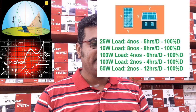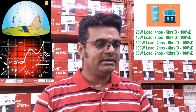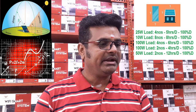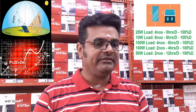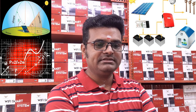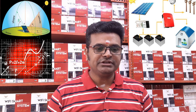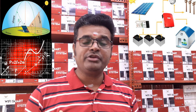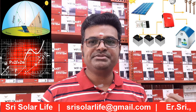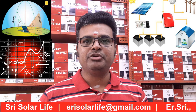Here are the load calculations we have considered: 25 watts, 4 numbers, running 5 hours per day; 10 watts loads, 8 numbers, running 8 hours per day; 100 watts loads, 4 numbers, running 6 hours per day; 100 watts loads, 2 numbers, running 4 hours per day; 50 watts loads, 2 numbers, running 12 hours per day. All loads are calculated based on 100% duty cycles. According to these calculations, you need almost 2022 units per year — that is the total power consumption for this load if running for the entire year.